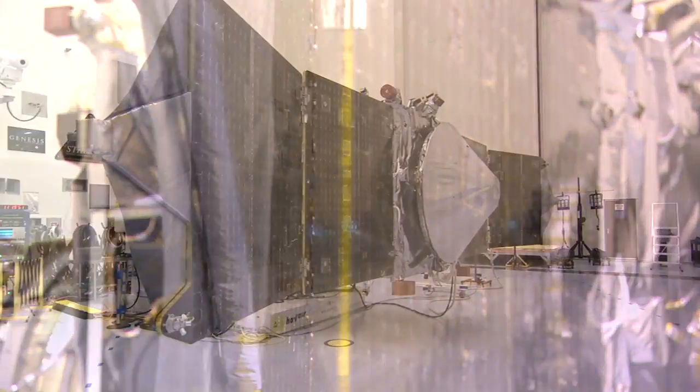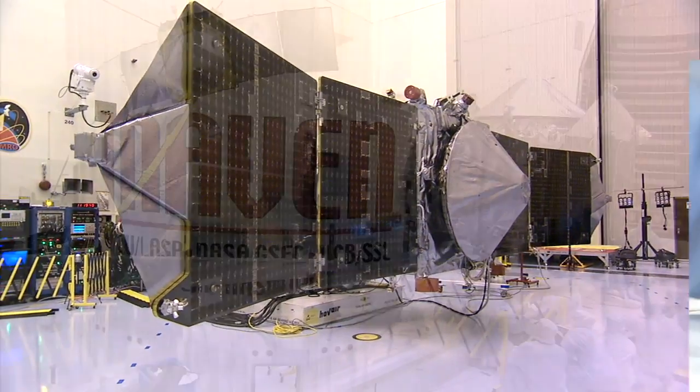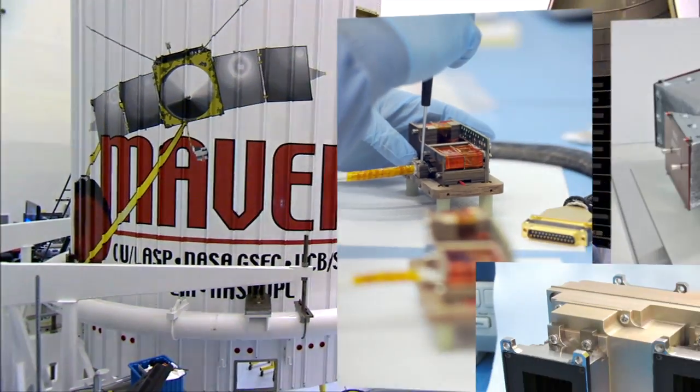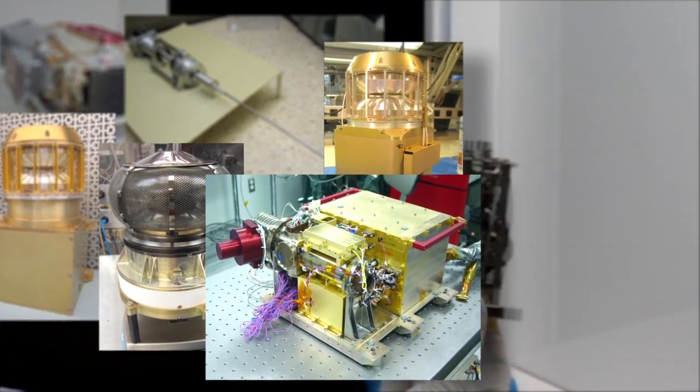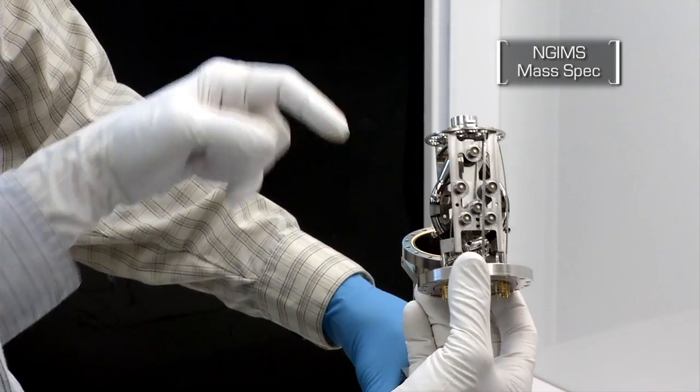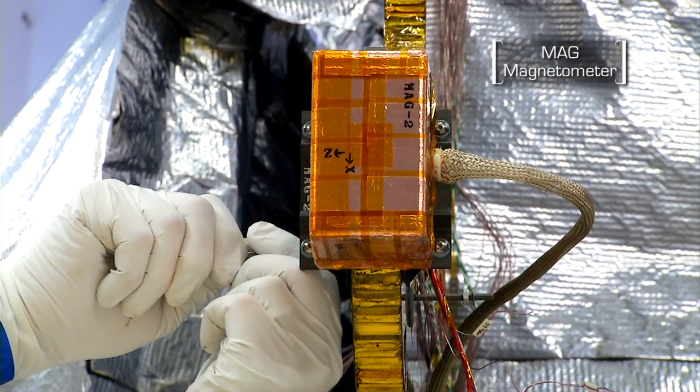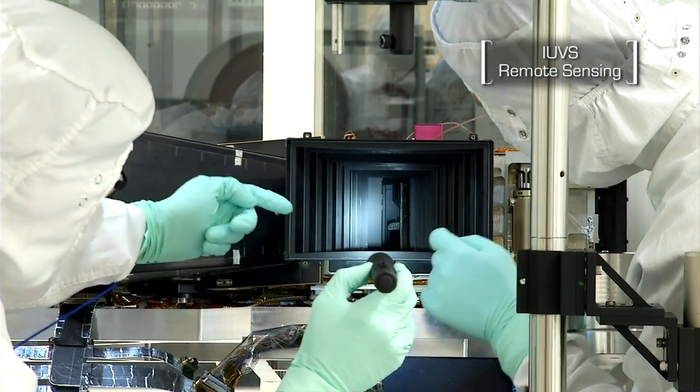Pursuit of answers requires serious muscle. MAVEN carries eight scientific instruments, each designed to examine specific aspects of the Martian environment, from atmospheric composition to the planet's magnetic field to the characteristics of Mars' upper atmosphere.